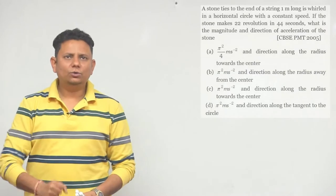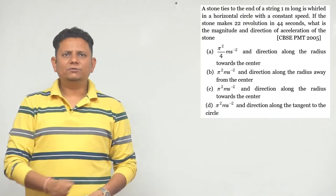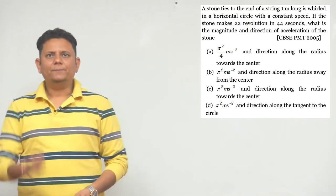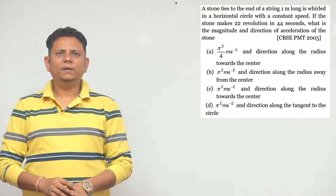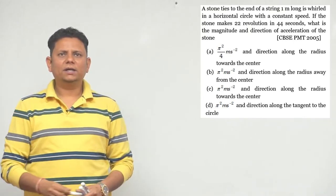Next question. A stone tied to the end of a string of length one meter is whirled in a horizontal circle with constant speed. If the stone makes 22 revolutions in 44 seconds, what is the magnitude and direction of the acceleration?